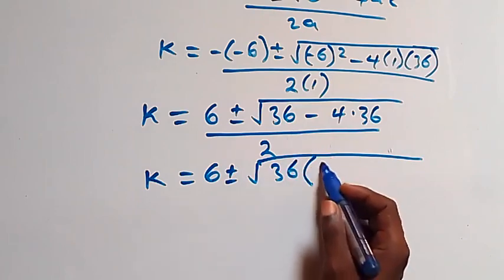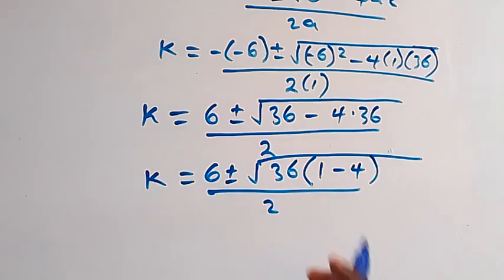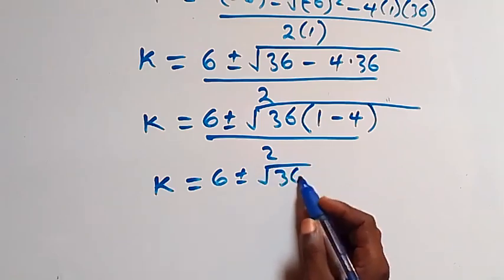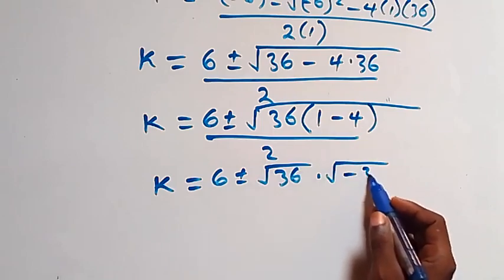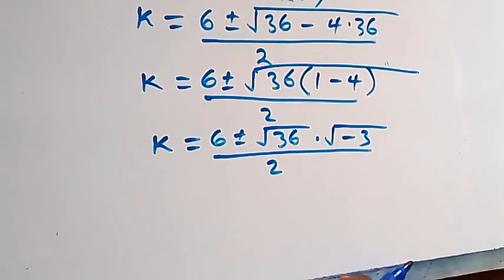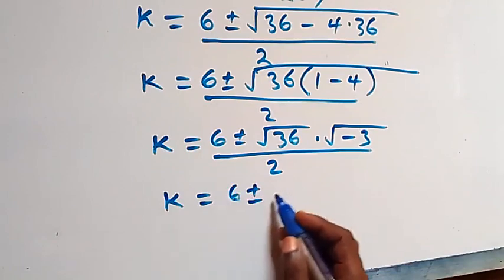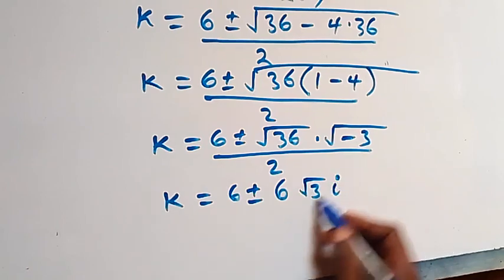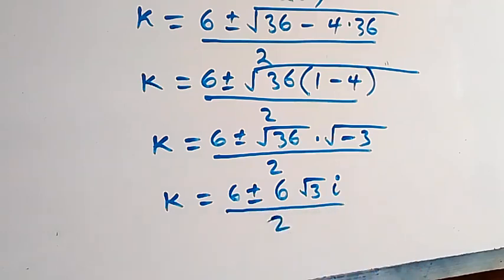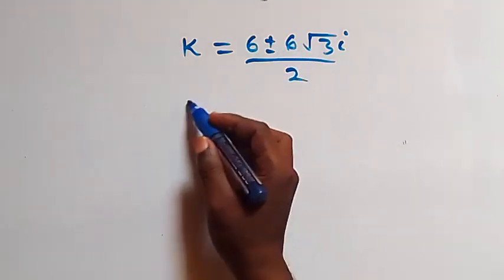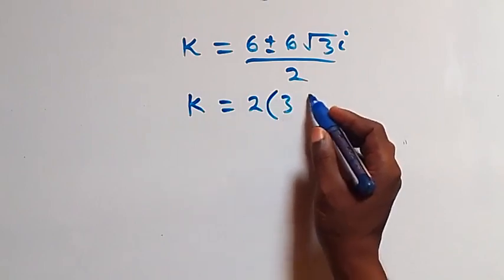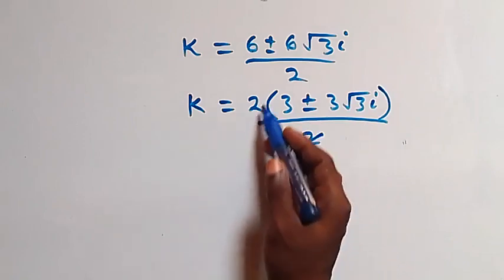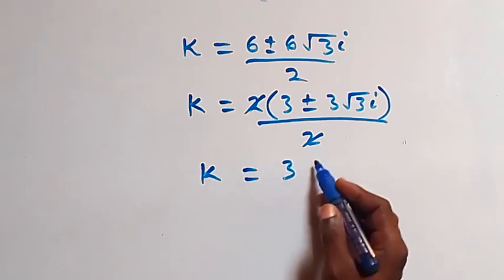We have 36 times (1 minus 4) over 2, and factoring out 2 common, this gives k equals 2(3 ± 3i√3) / 2. The 2 cancels, giving k equals 3 ± 3i√3, which are complex solutions.